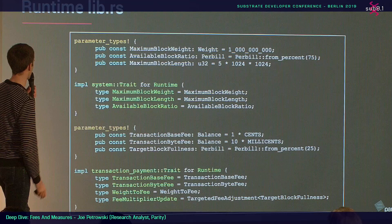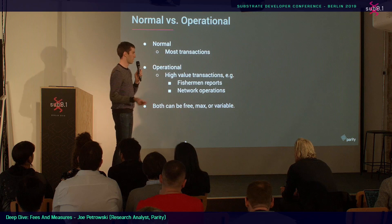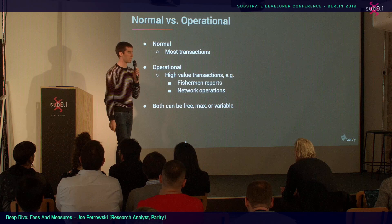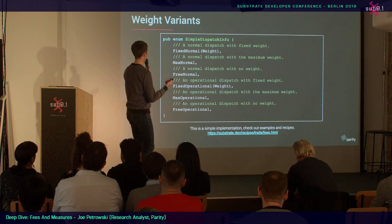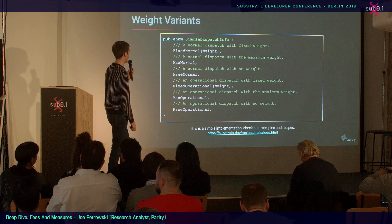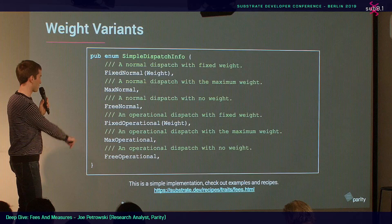Normal versus operational: normal dispatchables are most transactions — almost anything a user calls is going to be normal. Operational transactions are things you deem high value, like a fisherman report — you don't want that delayed because the block is full of other transactions. You want it to have reserved space so it can execute right away. Either type can have zero weight, max weight, or variable weight, represented in a simple dispatch info enum with fixed, max, and free.